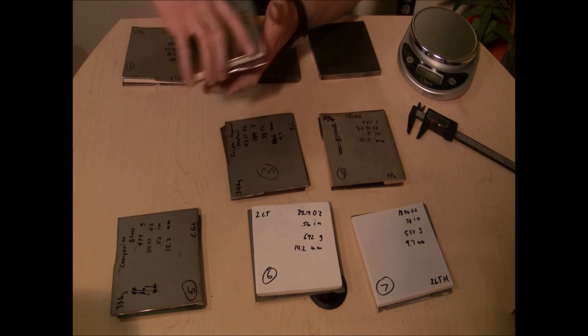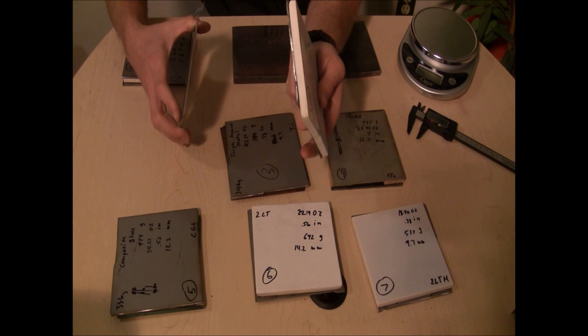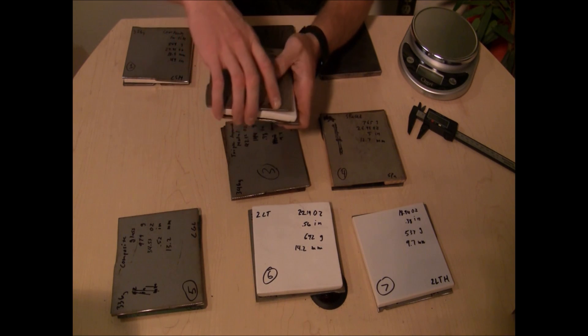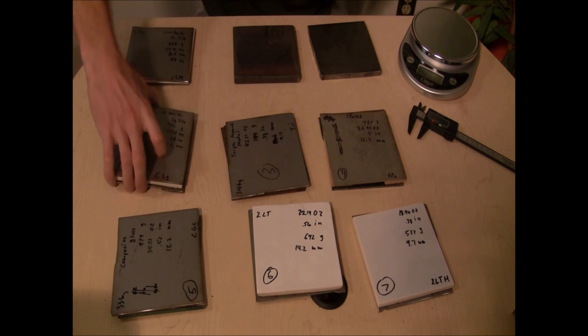Then, we'll move up to an 11 millimeter floor tile, which is substantially thicker, also sandwiched between two 3 millimeter mild steel plates.